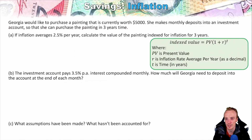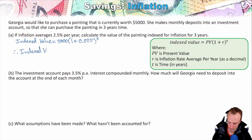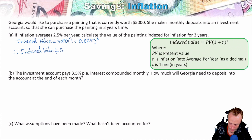Let's look at another example. Georgia would like to purchase a painting that's currently worth five thousand dollars. She makes monthly deposits into an investment account so that she can purchase the painting in three years' time. If inflation averages two and a half percent per year, calculate the value of the painting indexed for inflation for three years. So: indexed value = 5,000 × (1 + 0.025)^3. Plugging this into the calculator, the indexed value is approximately five thousand three hundred and eighty-four dollars and forty-five cents.